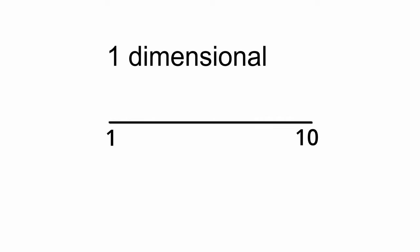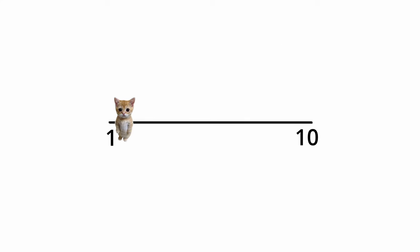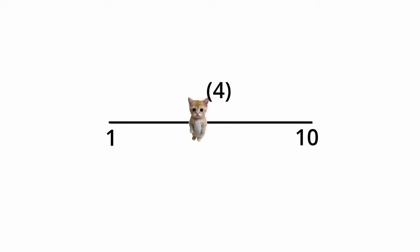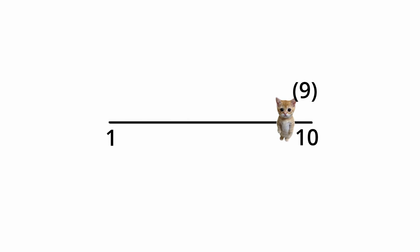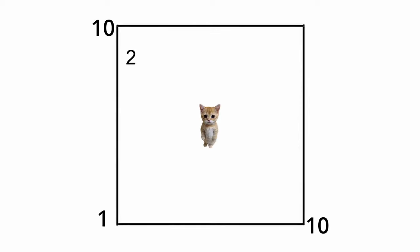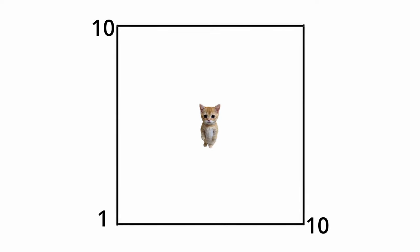This is a one-dimensional line. In this dimension, only one value is needed to describe the position of an object. Get a couple of these one-dimensional lines and you have yourself a two-dimensional plane. Here, you'll need two values to describe an object's position.